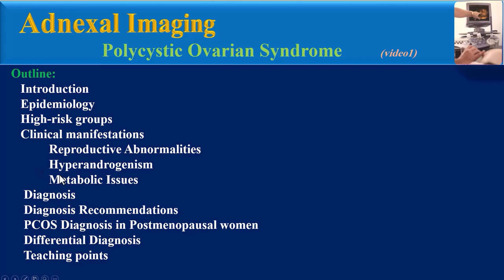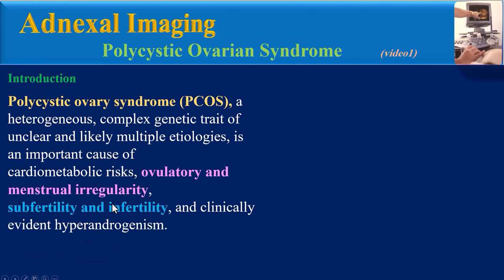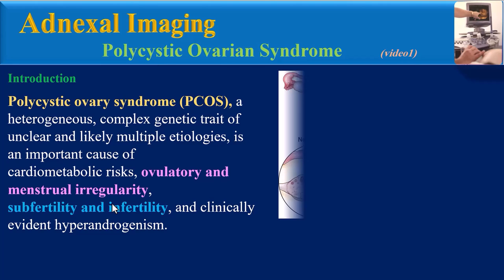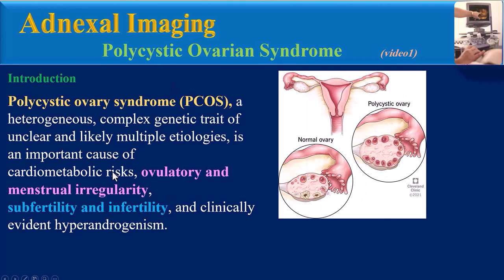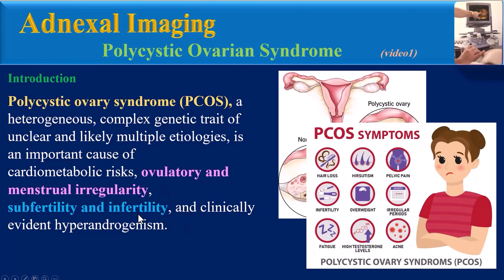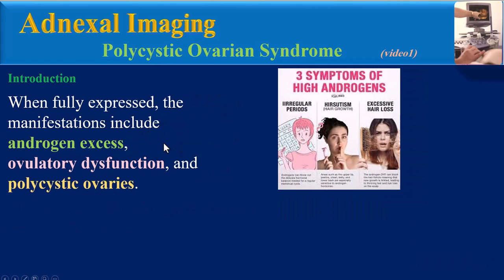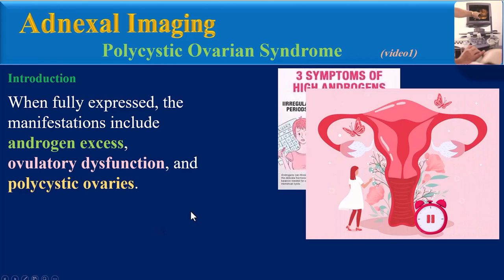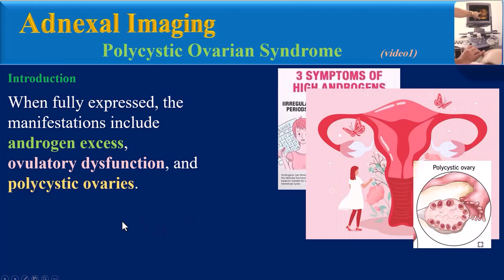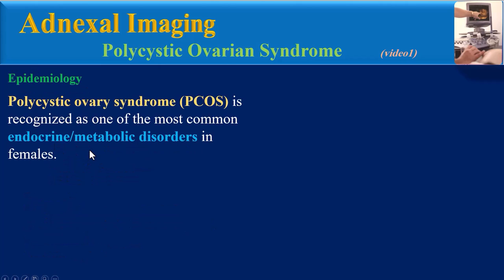Introduction: Polycystic ovary syndrome is a heterogeneous, complex genetic trait of unclear and likely multiple etiologies. It is an important cause of cardiometabolic risks, ovulatory and menstrual irregularity, sub-fertility and infertility, and clinically evident hyperandrogenism when fully expressed. The manifestations include androgen excess, ovulatory dysfunction, and polycystic ovaries.